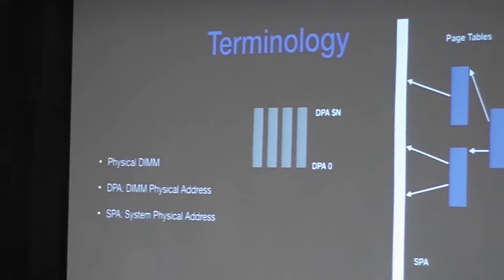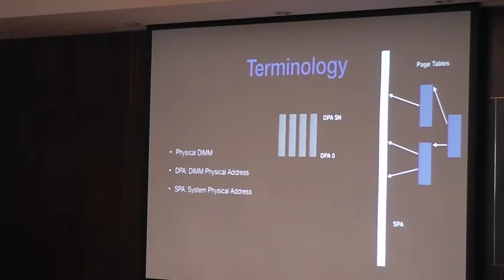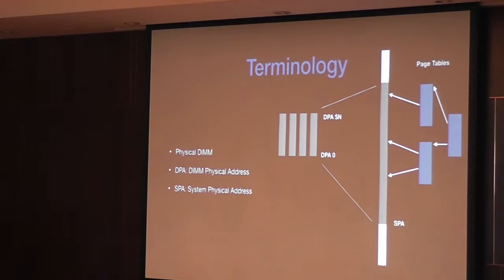Let's start with some terminology. We have physical DIMMs — a DIMM is a dual in-line memory module, the physical thing you plug into your motherboard. Each DIMM has within it DIMM physical addresses, or DPAs, relative to that DIMM from address zero through however big it is. To access those DPAs, you can't access them directly — you have to put them into page tables, and page tables need system physical addresses. So there has to be a mapping from the DIMM physical addresses to the system physical addresses.